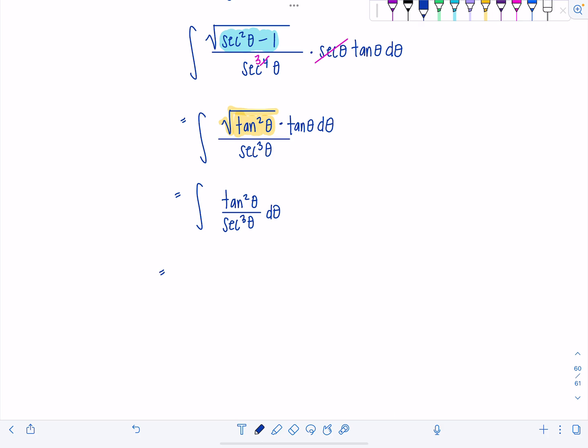So if we have tangent squared theta in the numerator, that's sine squared theta over cosine squared theta. And then secant cubed theta in the denominator, well, we know secant is 1 over cosine, so then that's going to be the same as multiplying by cosine cubed theta over 1. And then we have d theta.